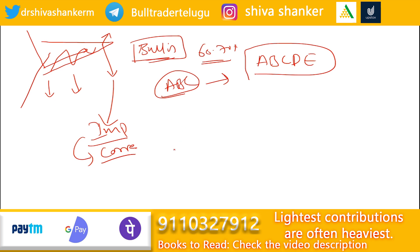So what is the impulsive wave? We have waves 1, 2, 3, 4, 5. In the impulsive wave structure, we have to identify this triangle pattern in the fourth wave.